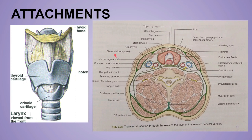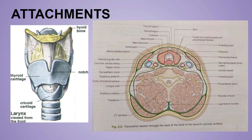Inferiorly, the pre-tracheal fascia below the thyroid gland encloses the inferior thyroid vein. Then it passes behind the brachiocephalic vein and finally blends with the arch of the aorta and the fibrous pericardium. On either side, this pre-tracheal fascia forms the front of the carotid sheath, which encloses the internal jugular vein, common carotid artery, and the vagus nerve. This pre-tracheal fascia fuses with the fascia deep to the sternocleidomastoid muscle.